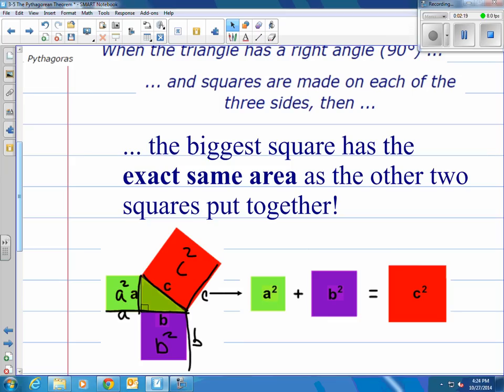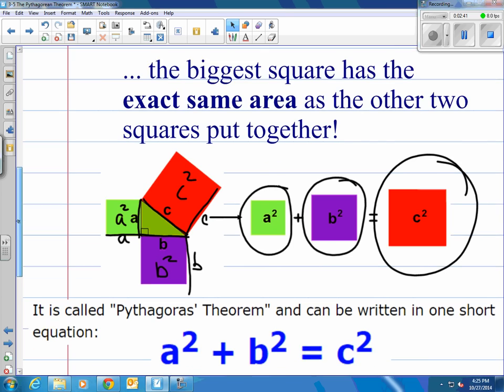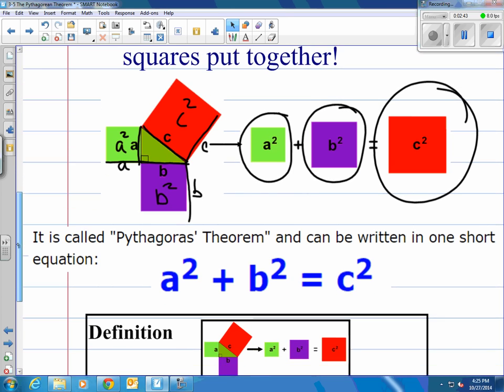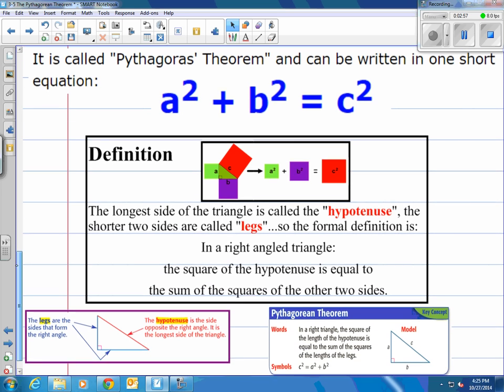And Pythagoras again discovered that he says that the largest square which is built off of the longest side otherwise known as the hypotenuse is equal to the two smaller squares exactly when you add them up. Pretty amazing discovery and it also helps us work with the right triangles. It's called the Pythagorean theorem. It can be written in one short equation as seen here. a² + b² = c². And those represent the actual squares.